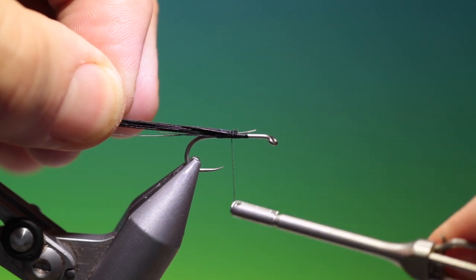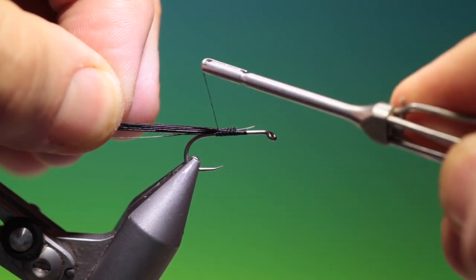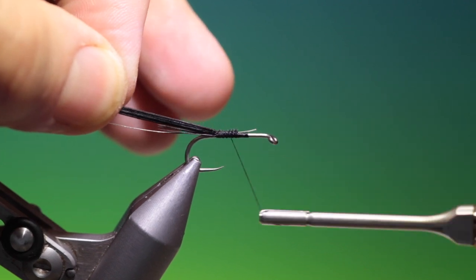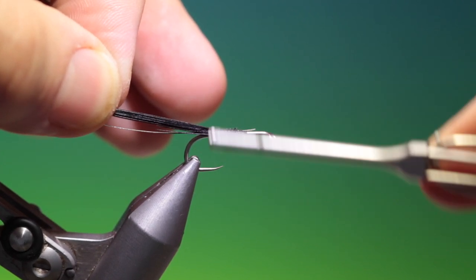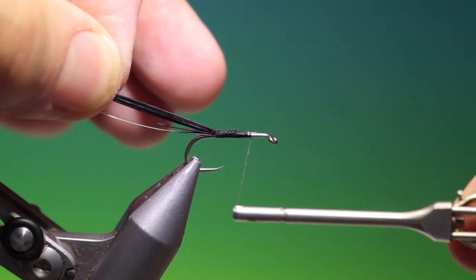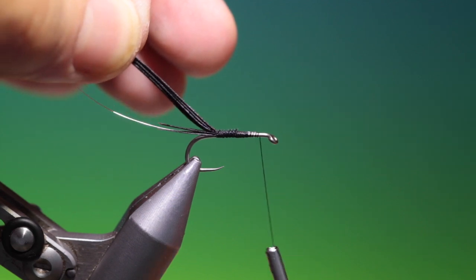Fold these back. Go back into the tail base and we can go back up again. Just build a little taper, not much. And we'll just move that tying thread forward.